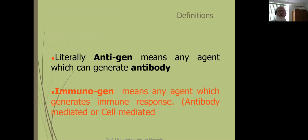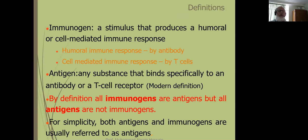Immune response may be either antibody-mediated or cell-mediated. So an immunogen is a stimulus that produces a humoral or a cell-mediated immune response — humoral immune response by antibody, and cell-mediated immune response by T-cells.